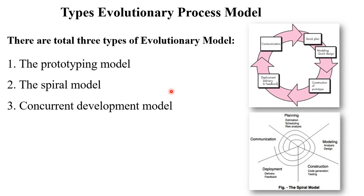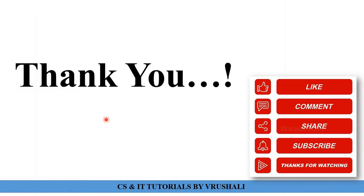Now the types of evolutionary model — there are three types: the prototyping model, the spiral model, and the concurrent development model. We will discuss all three models step by step with examples in the next sessions. Thank you. Keep learning.